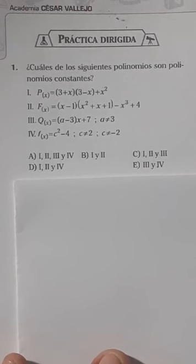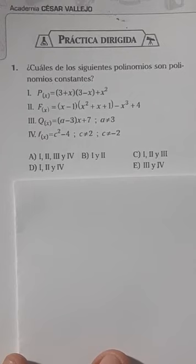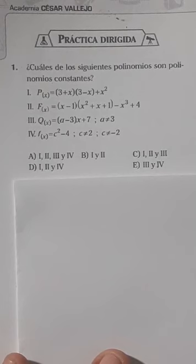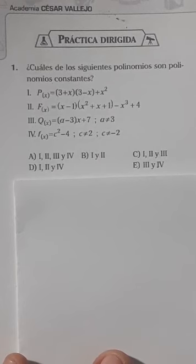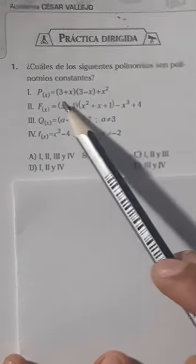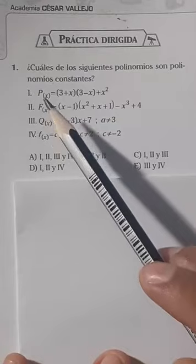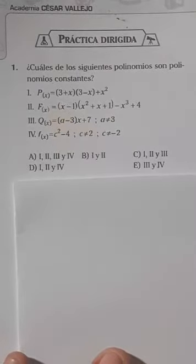Bueno, en este caso, un polinomio constante es cuando el término no tiene variable. Debes recordar que dentro de esos términos podemos incluir el 0, pero ojo, cuando tengamos el 0, vamos a decir que es un polinomio nulo. Por lo tanto, ese término que no tiene variable obviamente tiene que ser distinto a 0 para llamarlo polinomio constante. Lo que debemos ver es que en cada uno de estos posibles polinomios, solamente debemos considerar el término independiente.